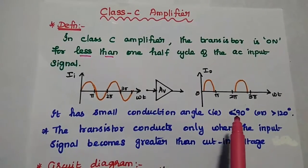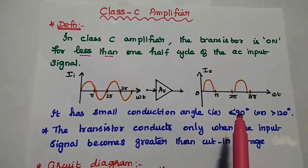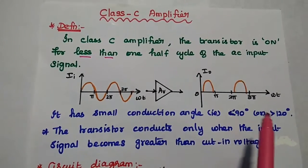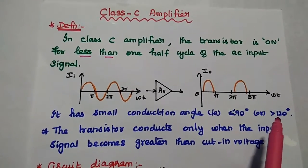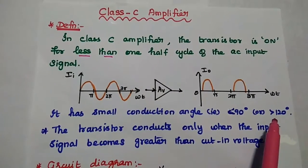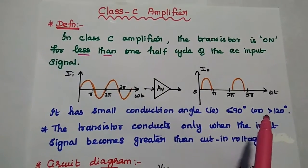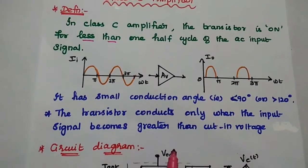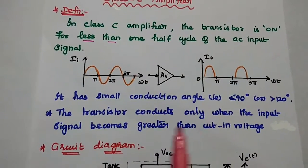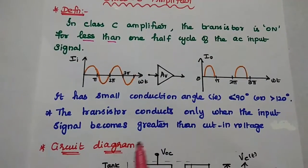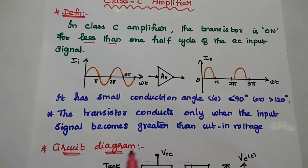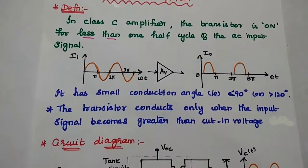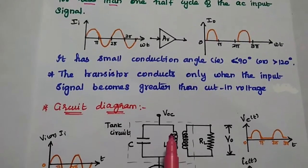In case of small AC signal, this value is from 90 degrees. In case of large AC signal, the variation is from 120 degrees to less than 180 degrees. Here the transistor conducts only when the input signal becomes greater than the cut-in voltage. This is the condition for class C amplifier.